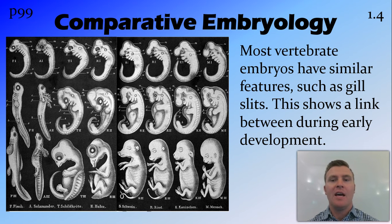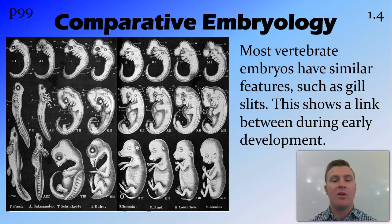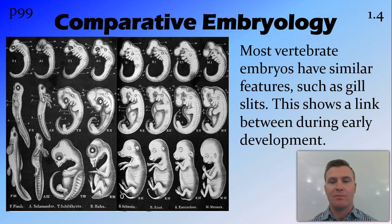Comparative embryology is looking at the similarities between different embryos. When you compare the early stage embryos of pretty much all vertebrates — that is, animals with a backbone — they all have a very similar structure and similar features. One of these features are gill slits, which are found on embryos of all vertebrates, including humans, even though these gill slits don't actually turn out to be gills in humans as they do in fish. But this link during early development shows some sort of historic evolutionary relationship.